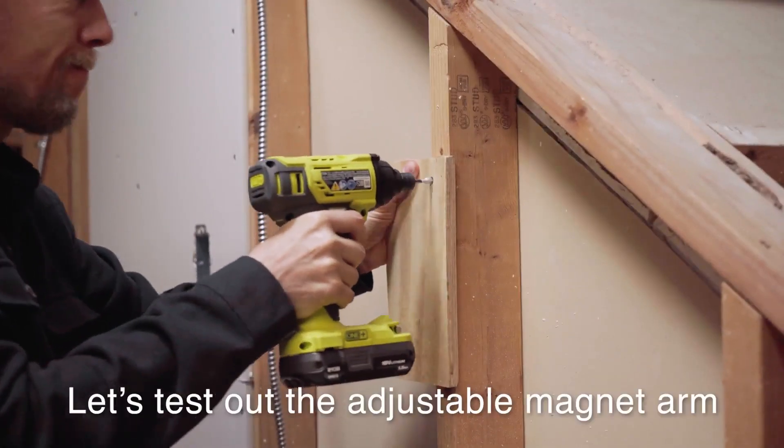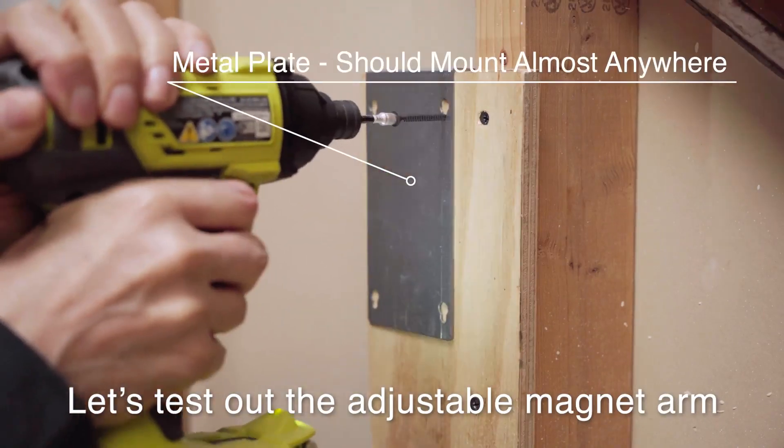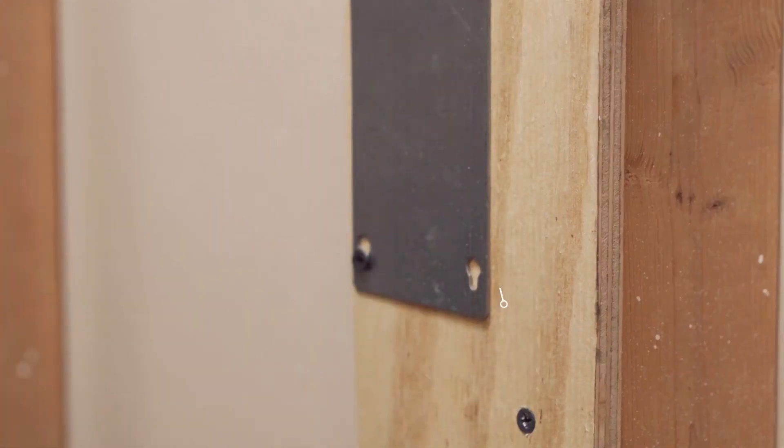Let's try out the adjustable magnet arm. First we'll install the metal mounting plate to a wall. It's perfect for use in construction sites.